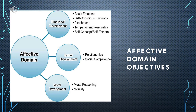The affective domain's objectives are the following. First, emotional development — talks about basic emotions, self-conscious emotions, attachments, temperament, and personality in the self-concept or self-esteem. The second is social development — talks about relationships and social competencies. And the last one is moral development — talks about moral reasoning and morality.